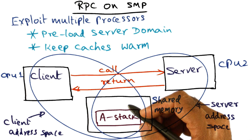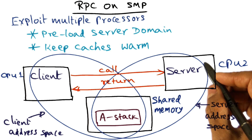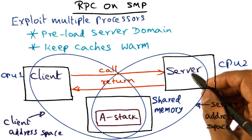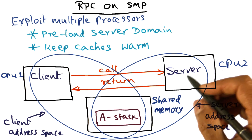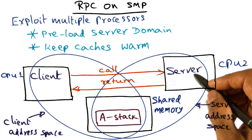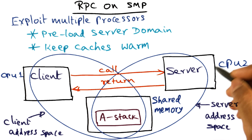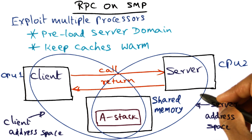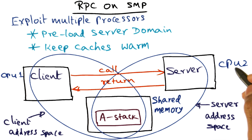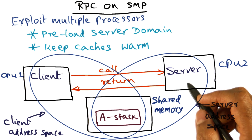The other thing the kernel can do is look at the popularity of a particular server. If a server is serving lots of different clients, then in a multiprocessor, based on monitoring, it can decide that we may want to have multiple CPUs dedicated to that service. That way, several different domains of the same server are preloaded in several CPUs to cater to the needs of several simultaneous requests coming in for a particular service.